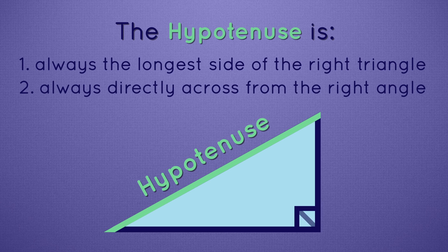The right angle symbol points right at the hypotenuse. So in this triangle, the hypotenuse is here. And in this triangle, the hypotenuse is over here.